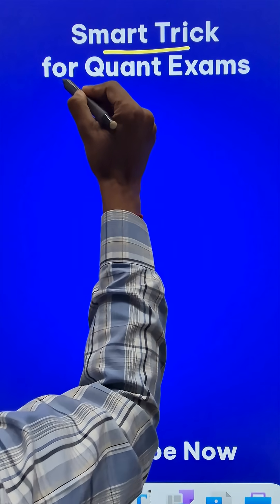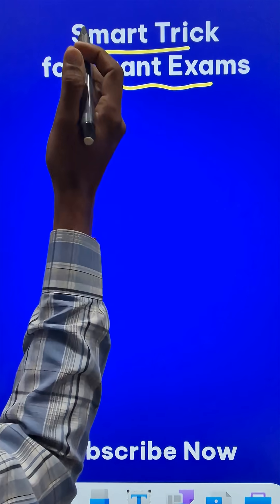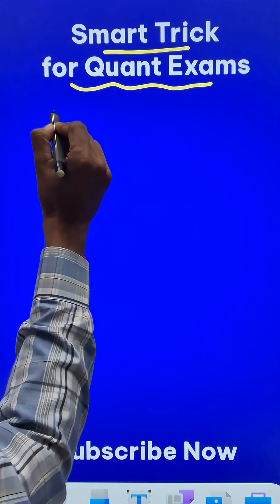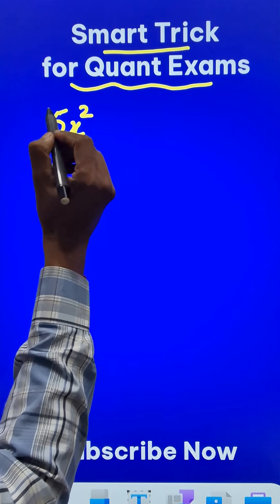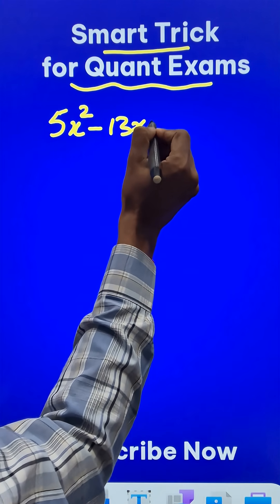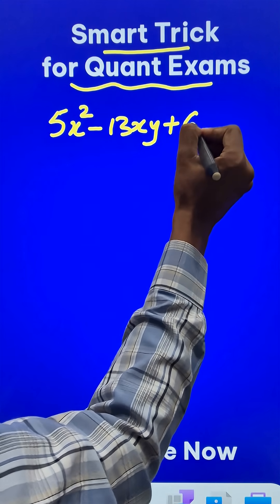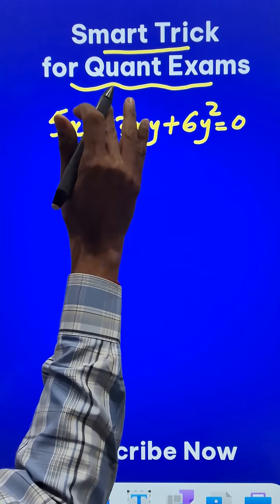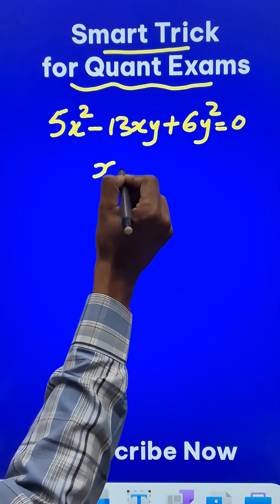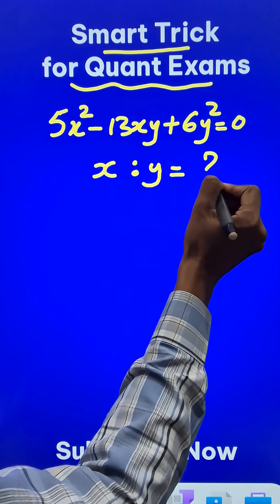Here is the smartest way to solve a very important question for quantitative aptitude exams. Suppose you are given that 5x² - 13xy + 6y² = 0 and you need to find what is the value of x ratio y. How do you do this?